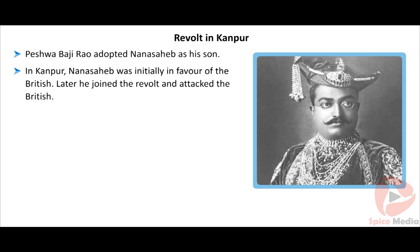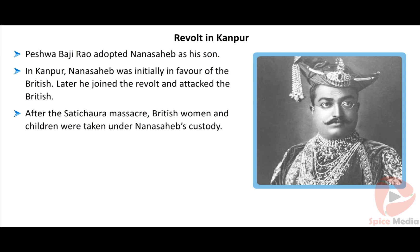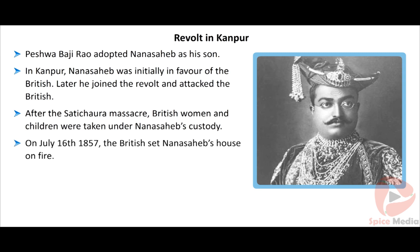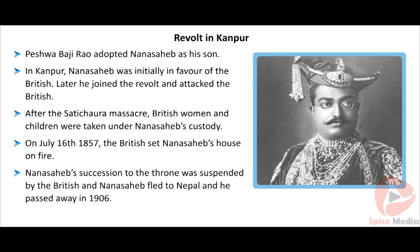Peshwa Baji Rao II adopted Nana Sahib as his son. The title Peshwa means Noble Maratha Prince. In Kanpur, Nana Sahib was initially in favour of the British but later attacked a British group that had taken refuge in the southern part of Kanpur. Nana Sahib bombarded the group held by General Wheeler in 1857 and the British suffered severe losses. The British were offered a choice to flee at Satichaura Ghat on the Ganges River, but this resulted in failure due to conspiracy and both sides fired — this incident is called Satichaura Ghat.